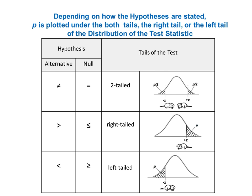The previous slide showed a one-tailed right-tailed test. On the bottom row we see a left-tailed test in which everything is flipped to the left. And the top row shows a two-tailed test in which the P value is split in two, with half placed under the left and right tails each. Whether the test is two-tailed or left- or right-tailed is dependent on the alternative and null hypothesis. You can see that the comparison symbol for the alternative hypothesis in the first column points in the direction of the test.